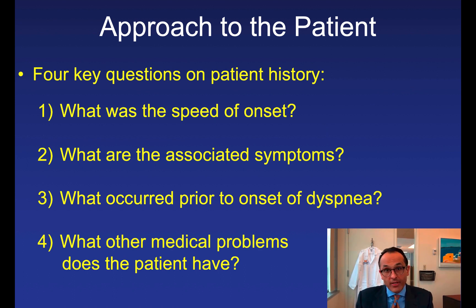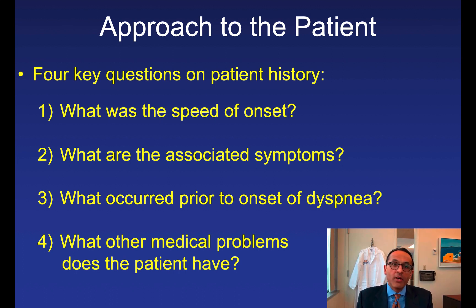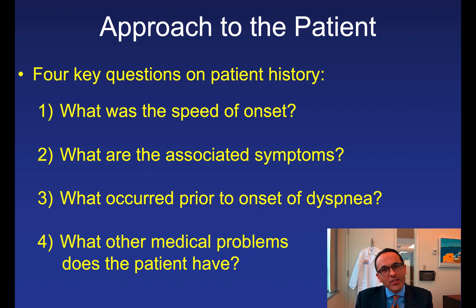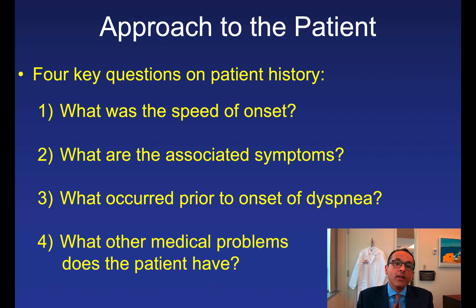There are four key questions to gather in your history of present illness. First, what was the speed of onset — was it sudden or more gradual? Second, what are the associated symptoms? Shortness of breath with fever and productive cough leads down a different pathway than shortness of breath with substernal crushing chest pressure radiating down the ulnar portion of the left arm. Third, what happened just prior to onset — did they just get off a long plane flight or were they mowing the lawn? Fourth, what other medical problems does the patient have — for example, a low ejection fraction and dietary non-compliance could explain heart failure.